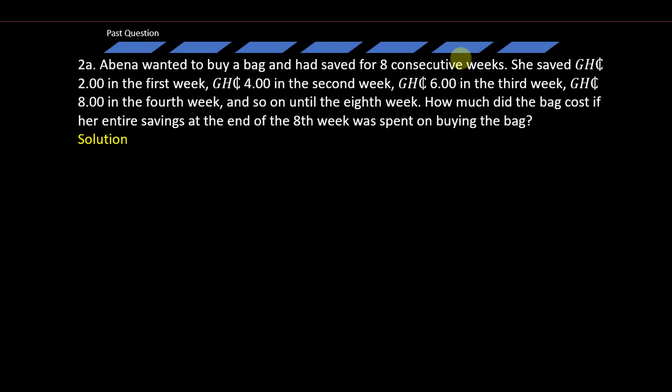But the rule can also be that the amount she contributes each week is simply equal to the week number times 2 Ghana cedis. So week 1 she contributed 1 times 2 Ghana cedis, week 2 she contributed 2 times 2 Ghana cedis which gives us 4 cedis, week 3 she contributed 3 times 2 Ghana cedis which gives us 6 Ghana cedis, week 4, 4 times 2 Ghana cedis also gives us 8 Ghana cedis. We can simply derive a rule that the amount contributed each week is simply equal to the week number times 2 Ghana cedis.